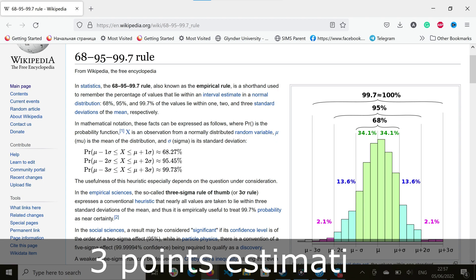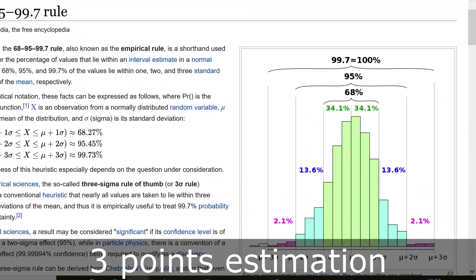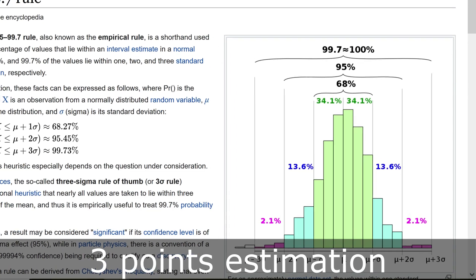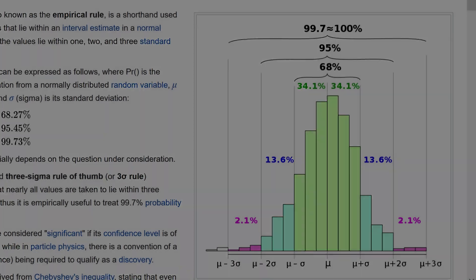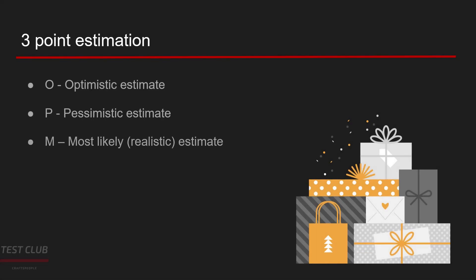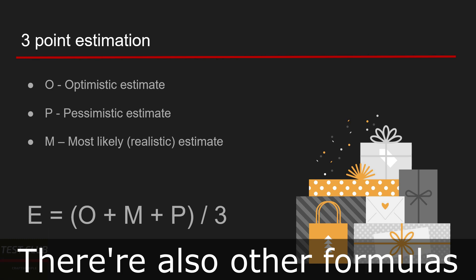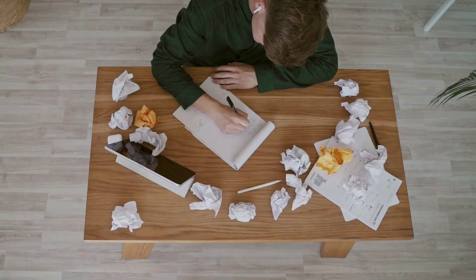Three-point estimation is based on the idea that estimating is actually predicting a value of a certain function, which usually sticks to a normal distribution. To make a three-point estimation, you need to come up with an optimistic, pessimistic, and realistic estimate. Then you calculate the expected estimate using a formula — there is more than one formula available, but you can start with a common one.